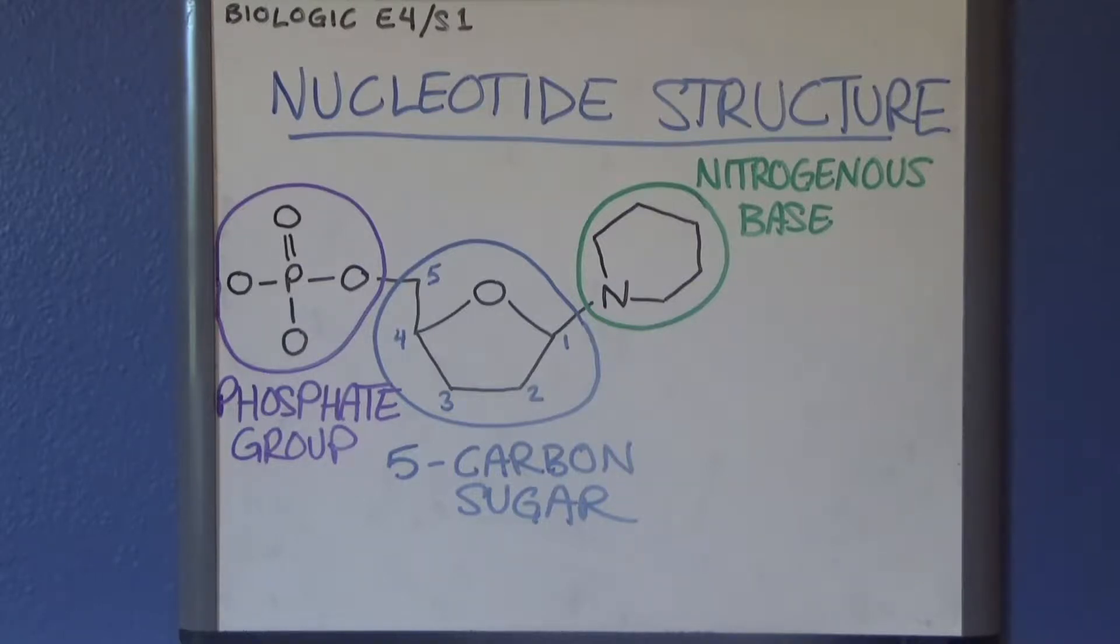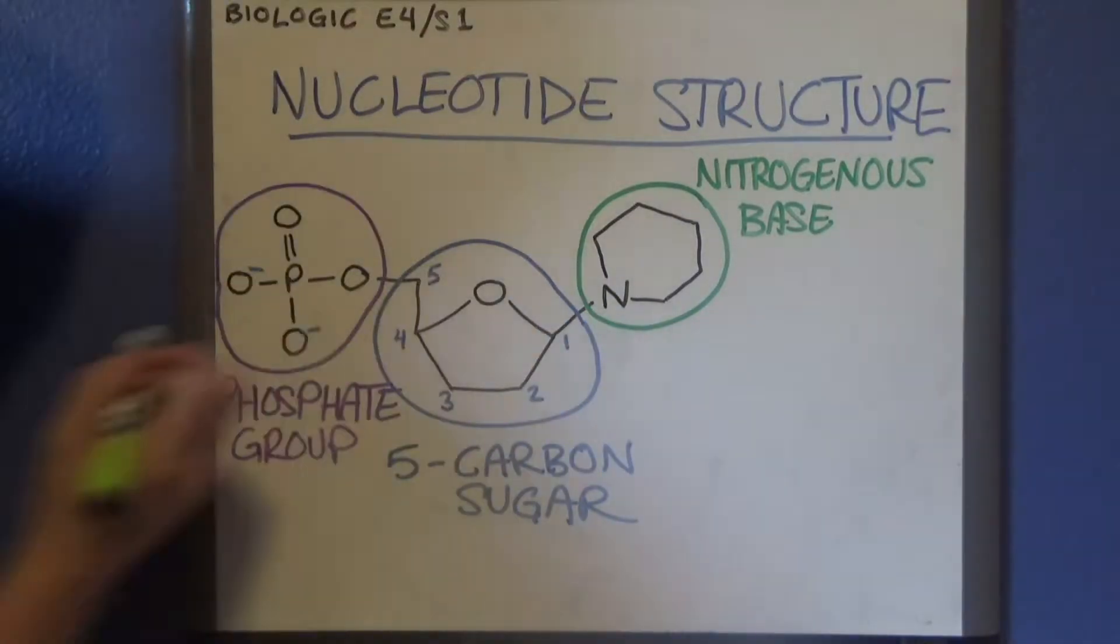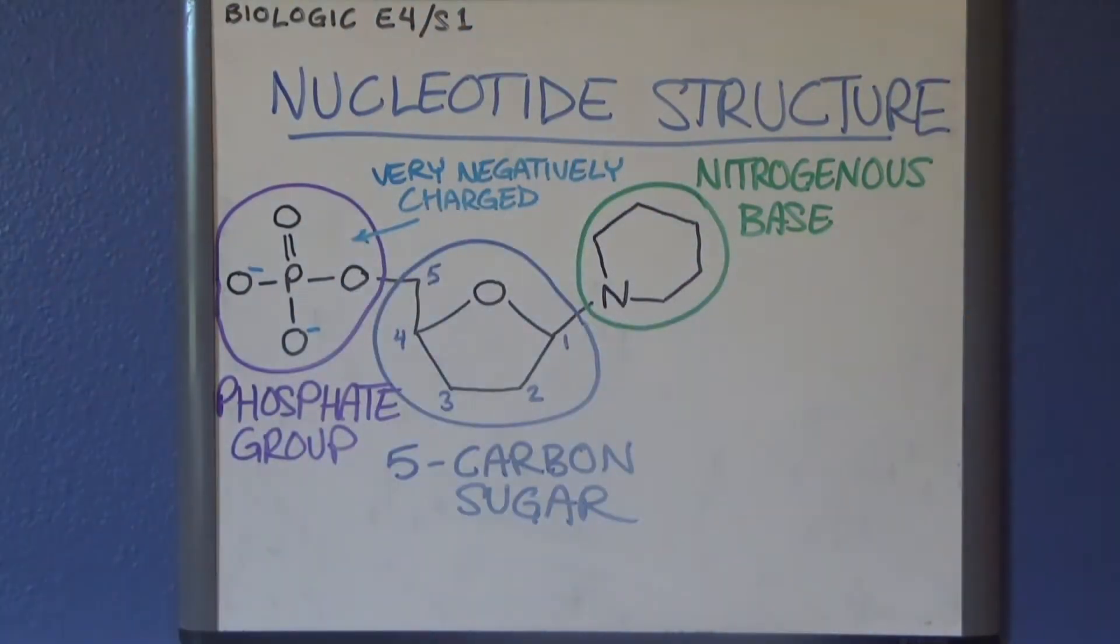I covered the phosphate group pretty briefly in episode 2. It's a phosphate atom that shares 5 bonds with 4 oxygen atoms. As a result, some of these oxygen atoms carry a full negative charge, which makes the molecule as a whole very negatively charged. One of the oxygen atoms bound to the phosphate atom will get rid of its negative charge by binding to this 5-prime carbon.